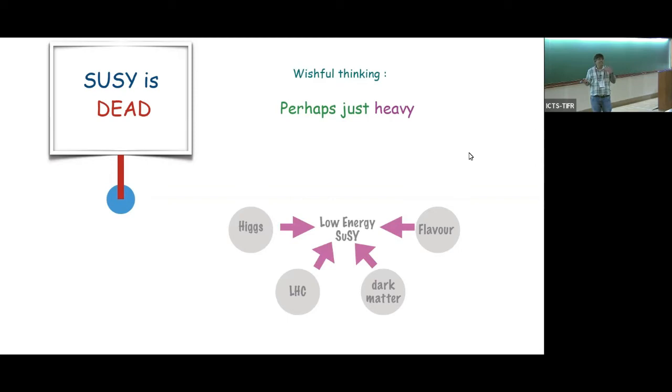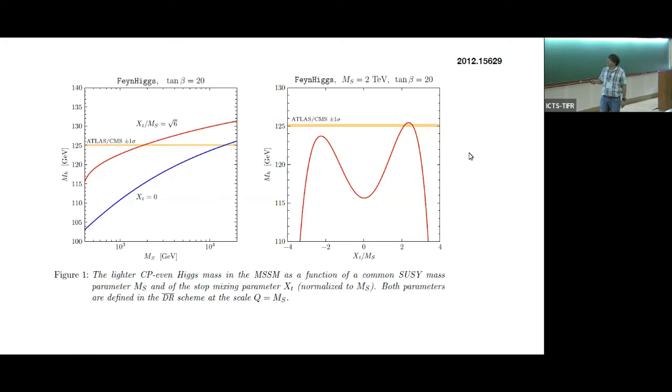Typically we have this feature that supersymmetry is dead. Many people, whenever I talk to people, they say supersymmetry is dead, why are you still looking at it, why are you working on it? But perhaps it's just heavy, and that's wishful thinking, we don't know. If it is heavy, low energy is constrained by various things. Higgs mass is a very important constraint, LHC results, dark matter, and flavor. I'll quickly go through all of these things.